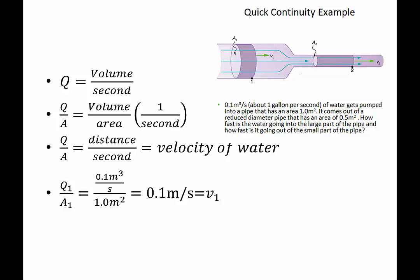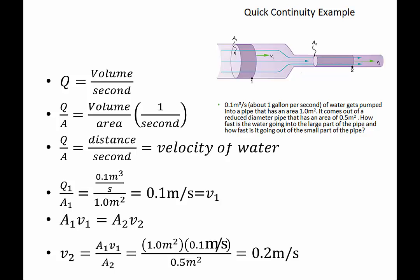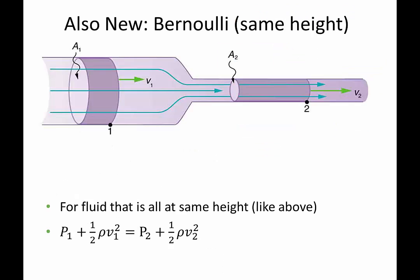Q stays the same throughout the pipe. Using a1v1 = a2v2, we can solve for v2: it's a1v1 divided by a2. Plugging in — 1 m² times 0.1 m/s divided by 0.5 m² — we find the speed goes up by a factor of two. So decreasing the pipe area by half doubles the water velocity. The water moves twice as fast through the right side as the left.